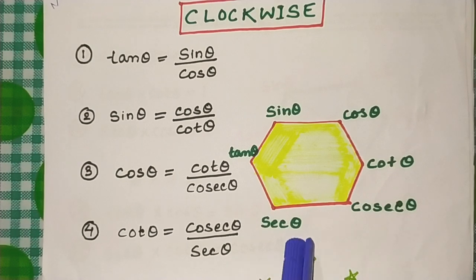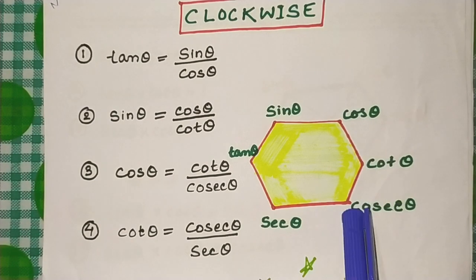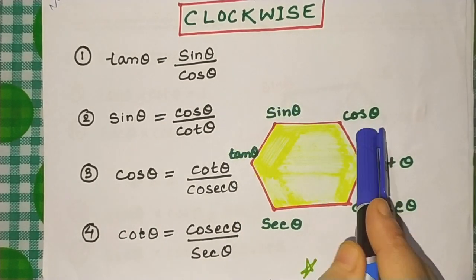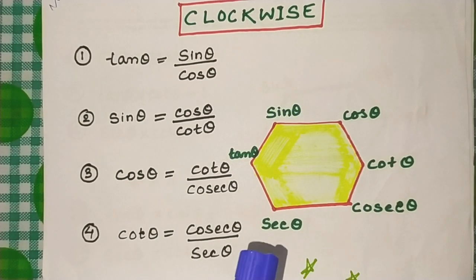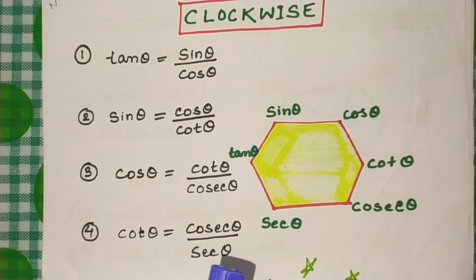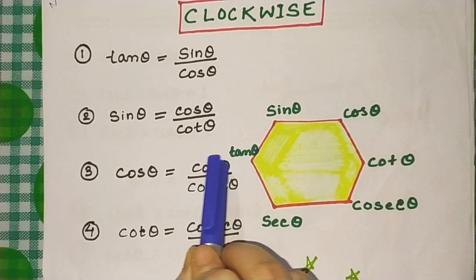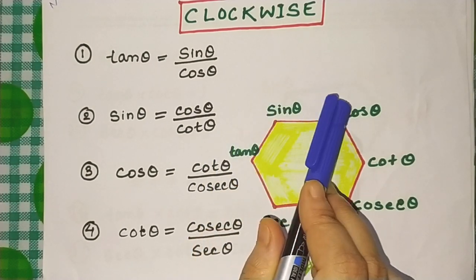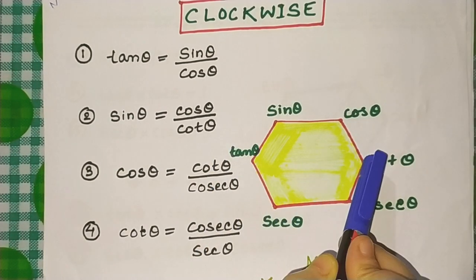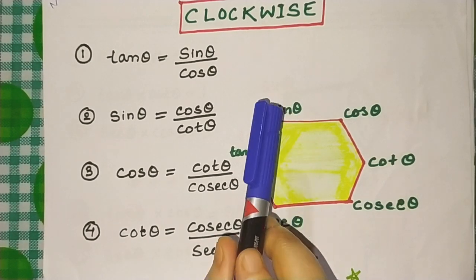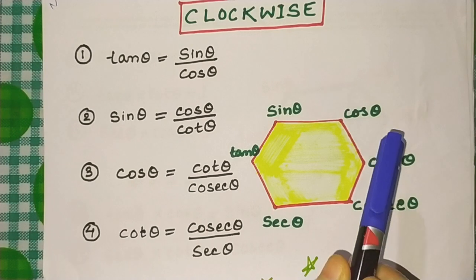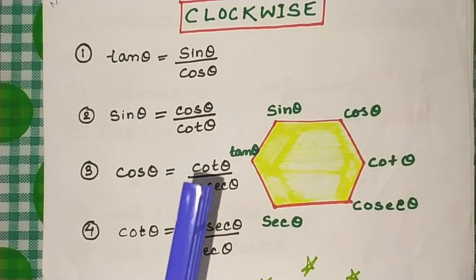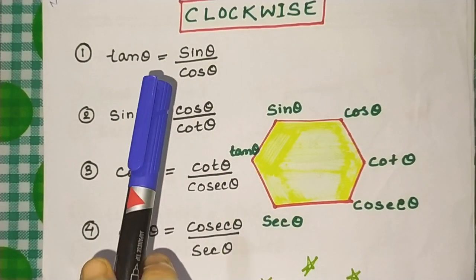I have drawn one hexagon. It is a hexagon because it has six vertices. Now I will allot the trigonometric functions over here — tan, sine, cos. I will start from tan, as you are in Class 10. Tan is equal to sine by cos. The opposite of tan is cot, the opposite of cos is sec, and the opposite of sine is cosec.